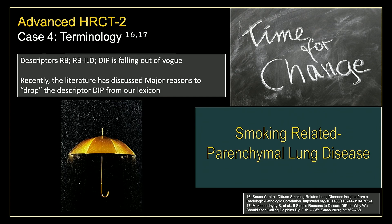The terms RB, RB-ILD, and DIP are falling out of vogue. Recent literature has discussed major reasons to drop these descriptors from the lexicon. Our pulmonologists no longer use these terms. These are now falling under the umbrella term smoking-related parenchymal lung disease — formerly advocated as smoking-related interstitial lung disease — and the move from 'interstitial' to 'parenchymal' reflects that many of these patients will not have interstitial changes on pathology or CT imaging. You'd expect to see this term replace the older ones in your practices over the next several years.